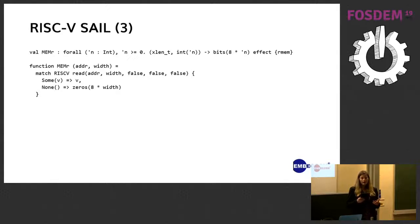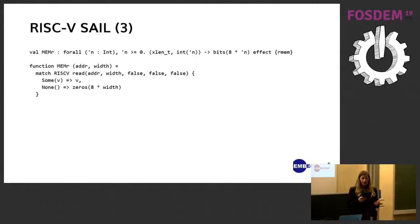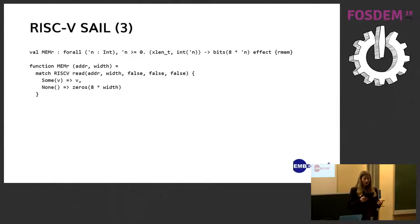We also give a function memr for reading memory. This function just points to a built-in we have defined elsewhere. Note that functions in SAIL are annotated with effects. The effects system is quite basic but indicates whether or not functions read or write registers — rreg and wreg — read and write memory — rmem and wmem — as well as a host of other concurrency model-related effects. They also indicate whether a function throws exceptions or has other non-local control flow, such as the escape effect.